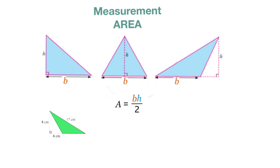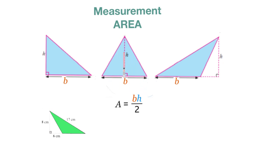Triangles come in various different shapes. Some are right angle triangles, others are acute triangles where the angles are less than 90 degrees, and other triangles are obtuse with one angle being greater than 90 degrees.